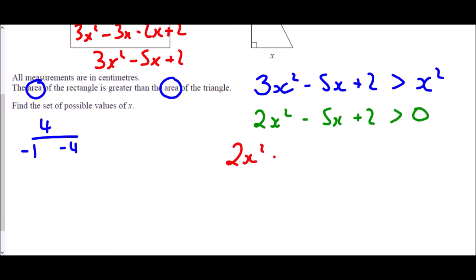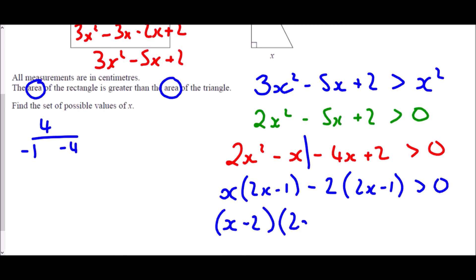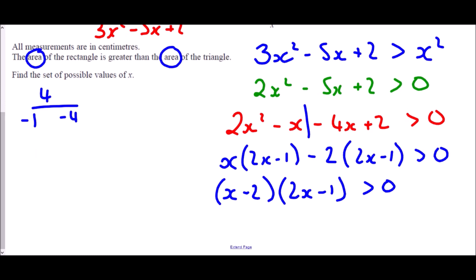So 2x squared take away x take away 4x plus 2 must be greater than 0. Splitting: the common factor of the first pair is x, giving x(2x take away 1); the common factor of the second pair is negative 2, giving negative 2(2x take away 1). Bringing together: (x take away 2)(2x take away 1) is greater than 0. In terms of solutions, x equals 2 and x equals one half.